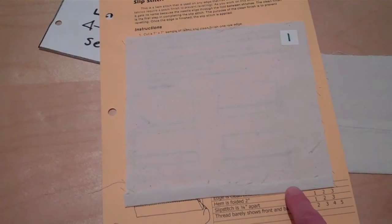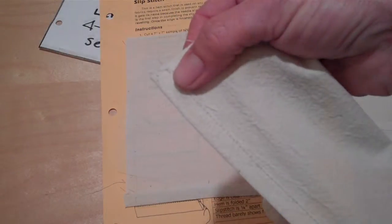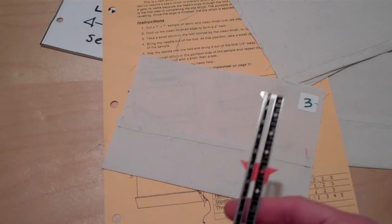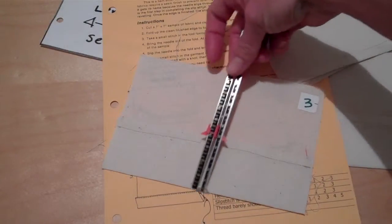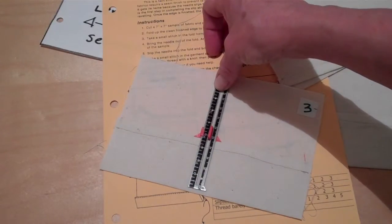Step number one is to fold a quarter inch and iron it. Then take it to the sewing machine and step number two will be to stitch that clean finish edge down. The third step is to form a two inch hem. So go back to the ironing board and fold up two inches and iron that.